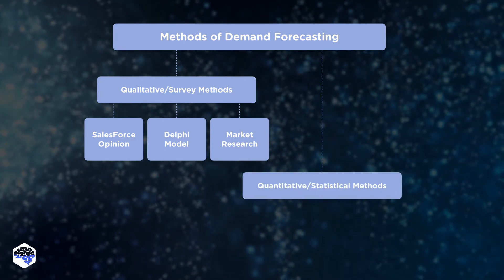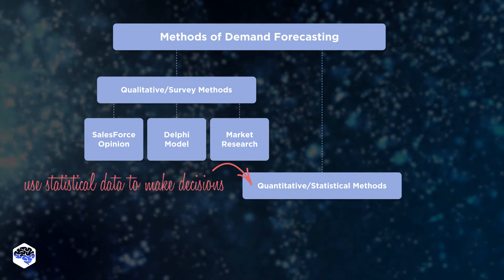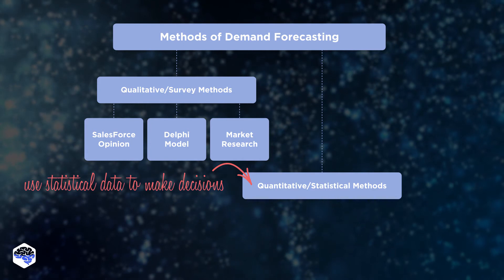The next type is quantitative methods, that focuses on hard numbers to express variables. These methods typically look at statistical data, both in the present and the past, to make decisions for the future.